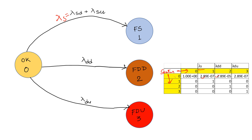The transition from state 0 to state 3 is given by lambda_DU. These states are absorbing — no repair is possible, so items cannot transition from fail safe back to OK, or hop between fail states. Therefore the probabilities of going from state 1, 2, or 3 back to state 0, or between states 1, 2, and 3, are all zero.